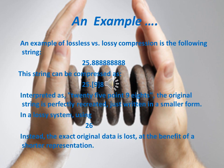Here is another example to distinguish lossy and lossless image compression. Consider the number shown on the screen. This string can be compressed as 25.98, as there are nine 8s in it — meaning the original string is perfectly recreated, just written in a smaller form. Whereas in a lossy system, it is written as 26 instead — the exact original data is lost at the benefit of a shorter representation.